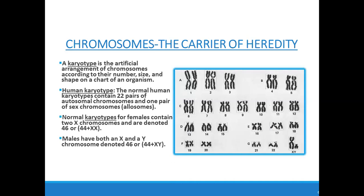The normal karyotype for females contains two X chromosomes, denoted XX, and 44 autosomes. In males, X and Y chromosomes are there, which are different in nature, and these are denoted by 44 + XY.